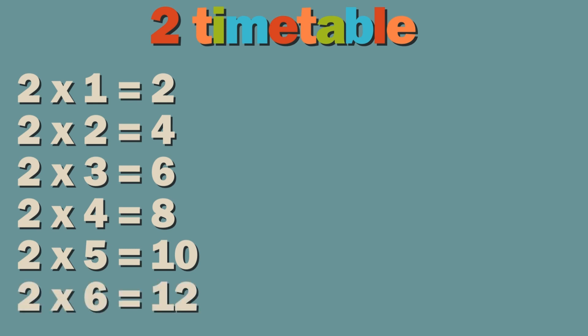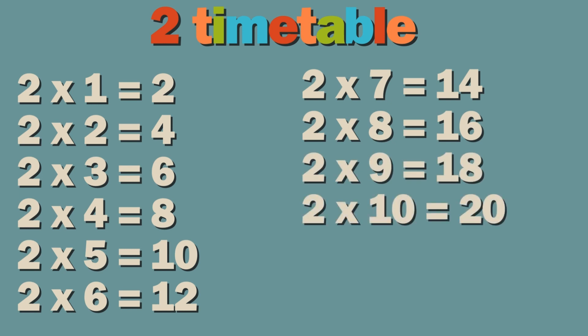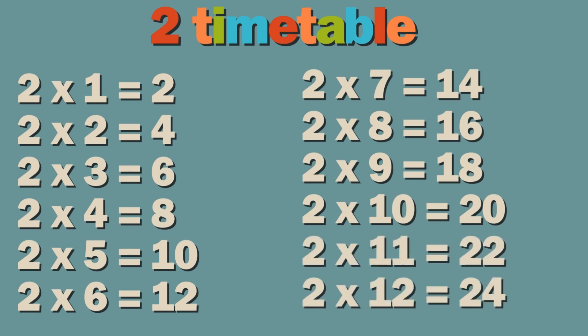Two times six equals twelve. Two times seven equals fourteen. Two times eight equals sixteen. Two times nine equals eighteen. Two times ten equals twenty. Two times eleven equals twenty-two. Two times twelve equals twenty-four.